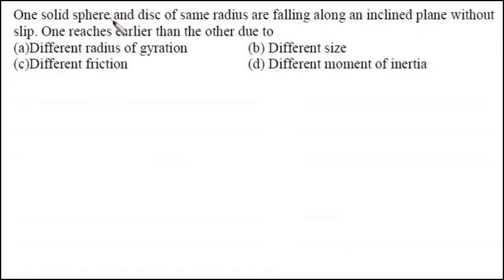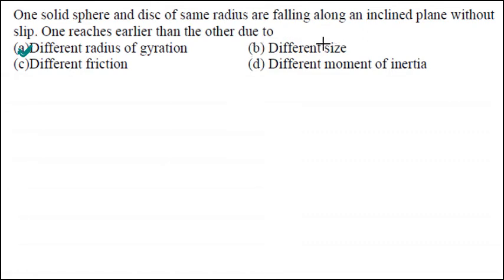Ninth question: One solid sphere and disc of the same radius are rolling along an inclined plane without slip. One reaches earlier than the other due to their different radius of gyration. The ratio k²/r² is different for each, so their times differ. If two solid spheres of different sizes roll, their velocities would still be the same because for a given object type, the k²/r² ratio is the same regardless of size.